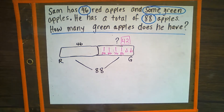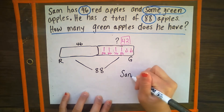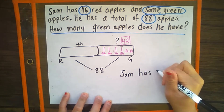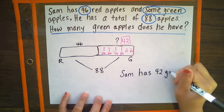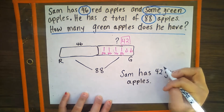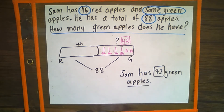Go ahead and write that up there and box it in. Do not erase the question mark so you know that that's the part you solved for. Going back to our question, which is how many green apples does he have — let's answer that in a complete sentence. Sam has 42 green apples. Go ahead and box in 42 because that's our solution, and then underline apples because that's our overall unit.